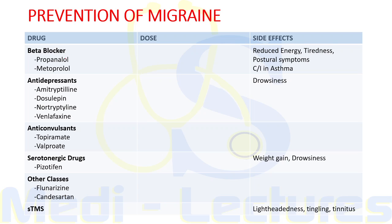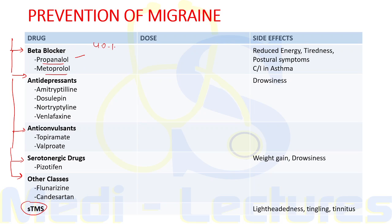Preventive drug classes include beta blockers, antidepressants, anticonvulsants, serotonergic drugs, and other classes. Beta blockers: propranolol 40 to 120 mg twice daily and metoprolol 25 to 100 mg twice daily. Side effects include reduced energy, tiredness, and postural hypotension; these are strictly contraindicated in asthmatics.